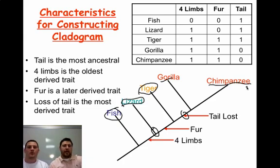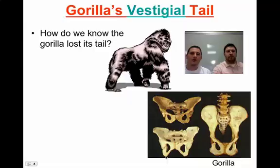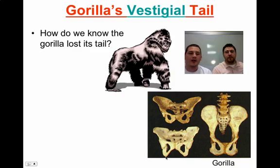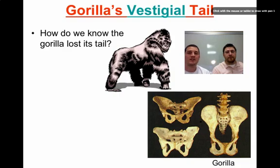How do we know the tail was lost rather than never having been present further down? Because the gorilla had a vestigial tail based on fossil records. Similar to humans, at the base of the spine is what's called a coccyx — a vestigial tailbone that is no longer used. So the gorilla we knew had one at one point in time, and it lost it somewhere through its evolutionary history.